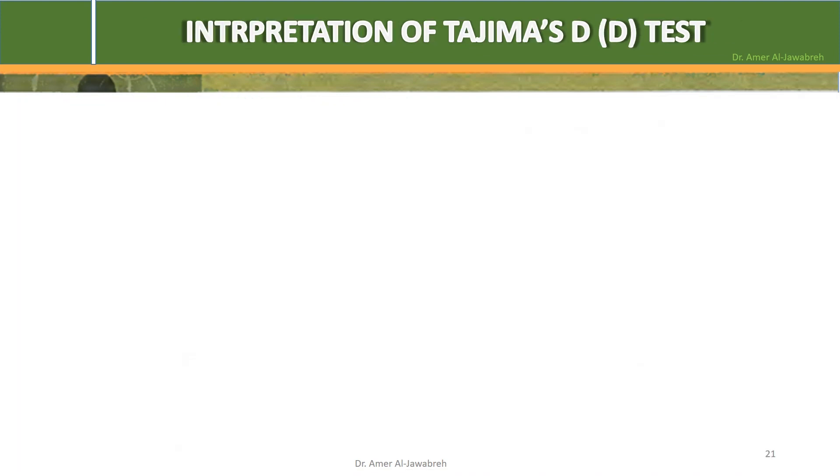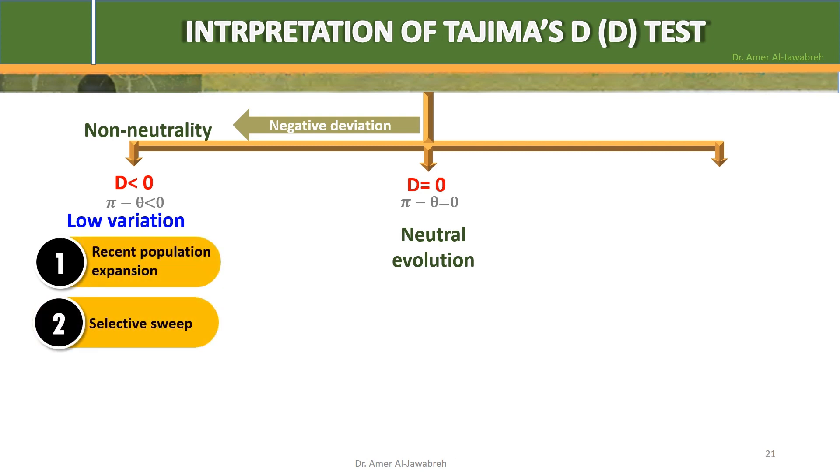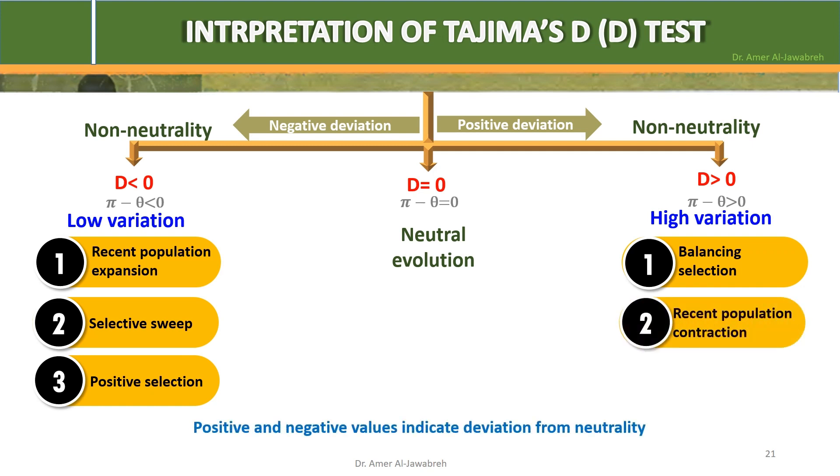Interpretation of Tajima's D test. Three possible results: 1. D equals 0: Difference between pi and theta is 0, which means both are equal, indicating neutral evolution. 2. D less than 0: Pi minus theta is negative, indicating low variation caused by recent population expansion or selective sweep or positive selection. And 3. D greater than 0: Pi minus theta is positive, indicating high variation caused by balancing selection or recent population contraction. Positive and negative values indicate deviation from neutrality.